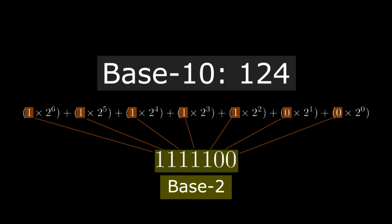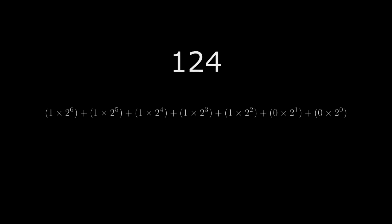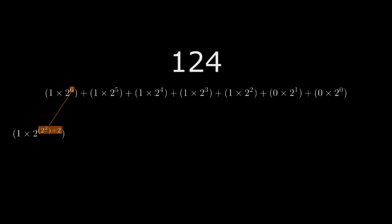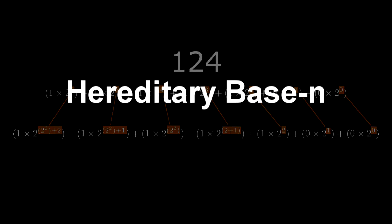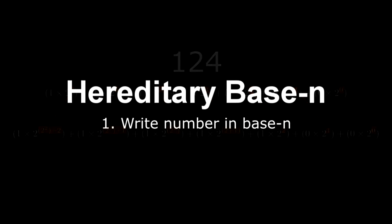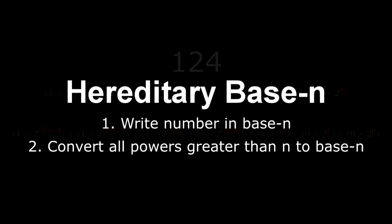A special kind of base notation that we need is called hereditary base notation. We start with the base notation — for example, base 2 notation — then all the powers must also be written in base 2 notation. We continue converting any number greater than 2 into base 2 notation until all values are either 0, 1, or 2. Generally, when writing a number in hereditary base n, we first write it in base n, then convert all powers greater than n into base n.